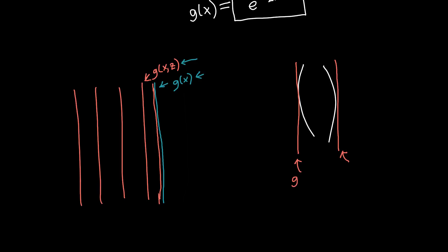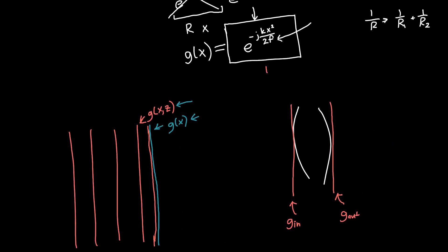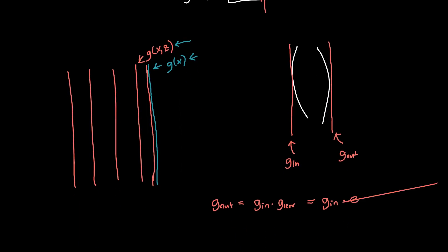If we call this g in, and we call this g out, then g out is just equal to g in times the aperture function of our lens, g lens, which we know now is just equal to this guy that we derived up above here, e to the minus j k x squared over two times the lens focal length. This is how we now deal with lenses in our system.